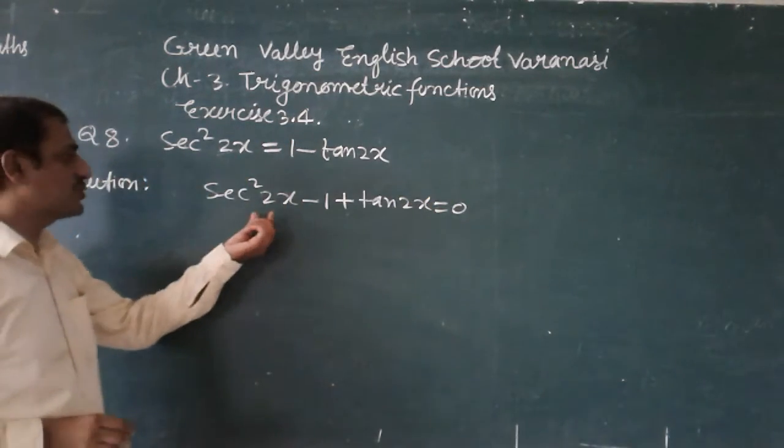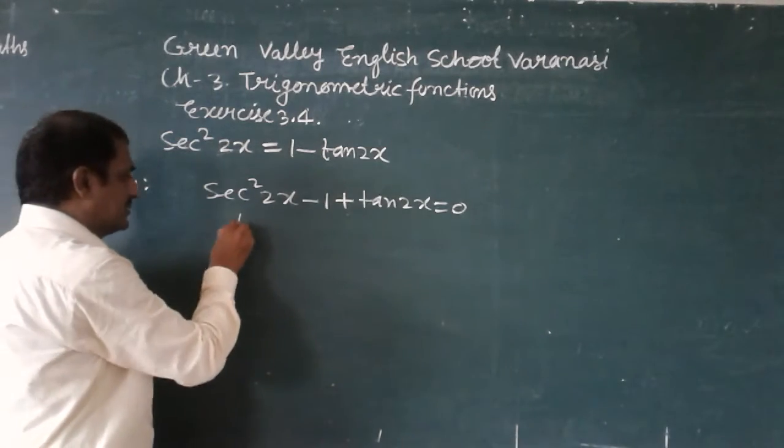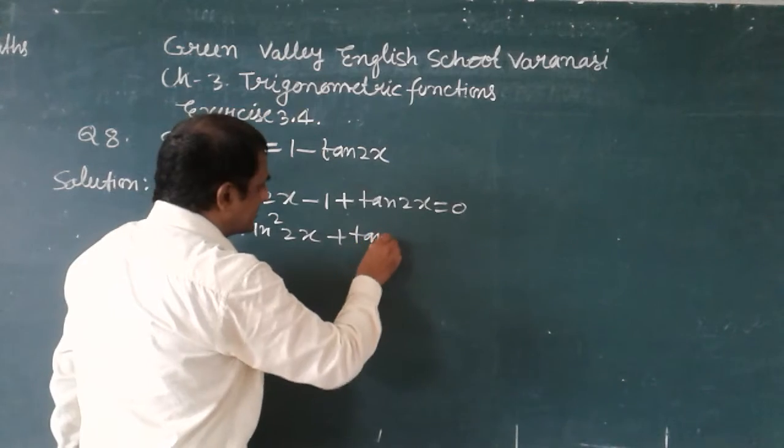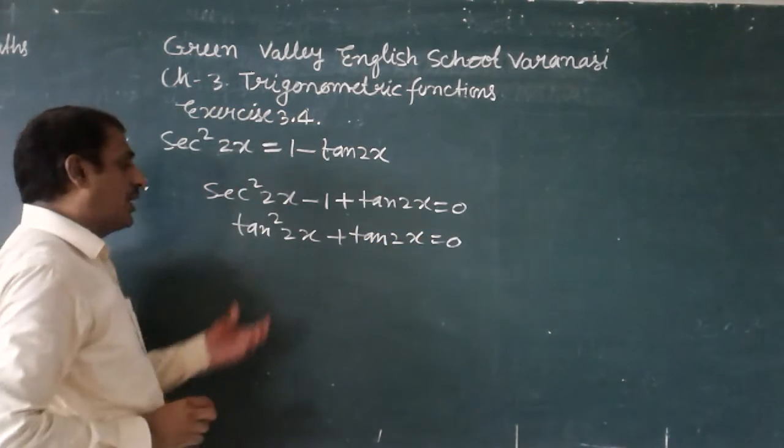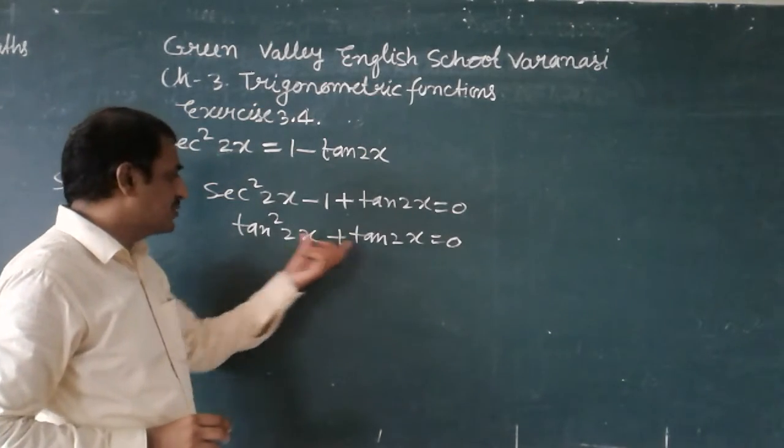sec²2x minus 1 is equal to tan²2x. So tan²2x plus tan2x is equal to 0. Now, I am taking tan2x as a common factor from both terms.